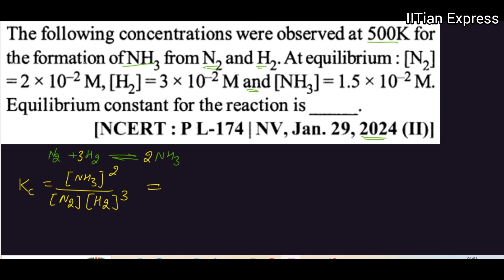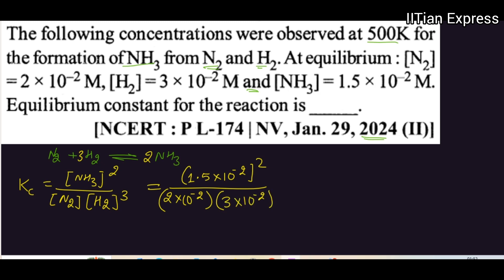Now the values are given. You have to write the values. So this is going to be (1.5 × 10⁻²)² divided by (2 × 10⁻²) × (3 × 10⁻²)³.